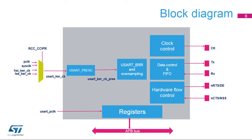This is the USART block diagram. The USART clock source or USART KERCK can be selected from several sources: the peripheral clock or APB clock, the system clock, the high-speed internal RC oscillator or HSI, or the low-speed external oscillator or LSE. The USART clock source can be divided by a programmable factor in the USART PRESC register. TX and RX pins are used for data transmission and reception. NCTS and NRTS pins are used for RS-232 hardware flow control. The driver-enabled pin or DE, which is available on the same I/O as NRTS, is used in RS-485 mode.